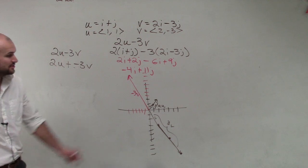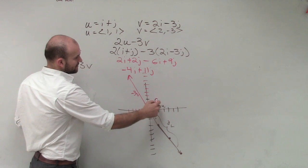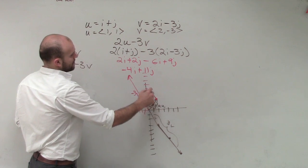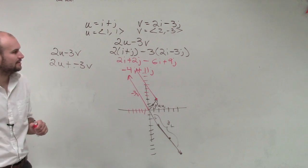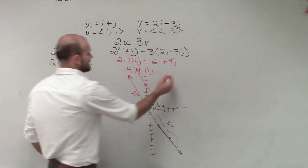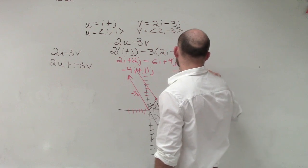So what I'm going to do now is I'm going to add this vector to the end of my vector 2u. And I know I can't get exactly, perfectly correct,